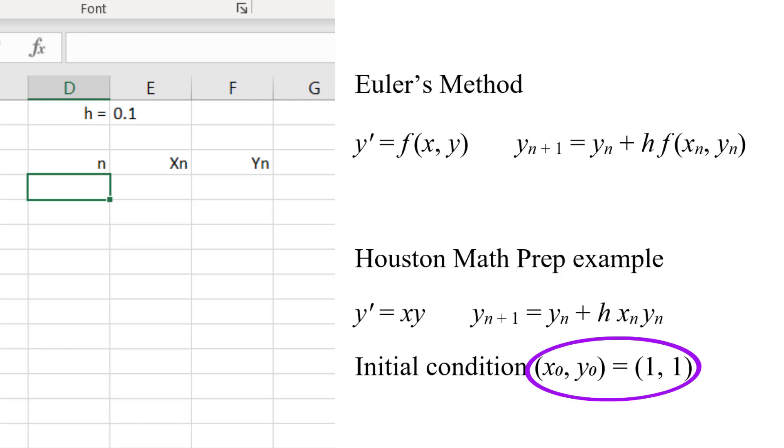Next, we put in the values for the initial point. At n equals 0, x sub n and y sub n are both 1.